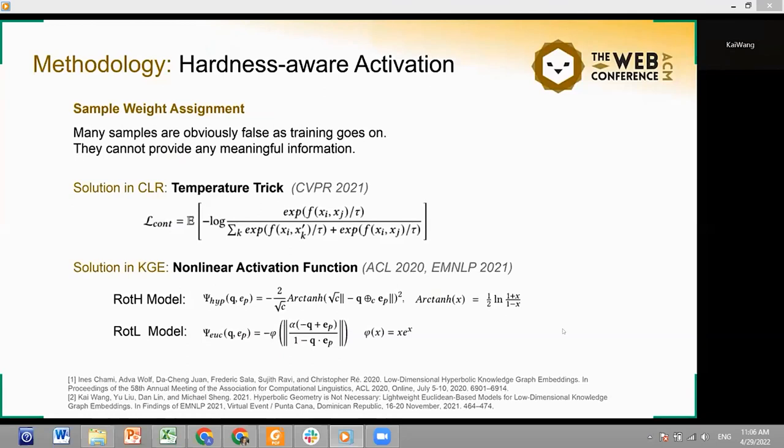In the contrastive learning loss, the temperature trick is utilized to address the weights on different negative samples, which is called the hardness-aware ability in the CVPR 2021 paper. And we found that the nonlinear functions in recent low-dimensional KGE models provide an easy way for weight assignments. The RotH model uses the arcsinh function in its hyperbolic scoring function, and the RotL model also uses a simplified nonlinear function.